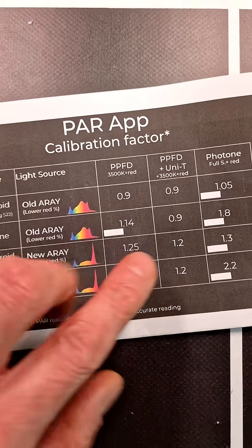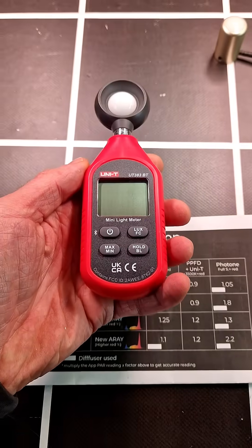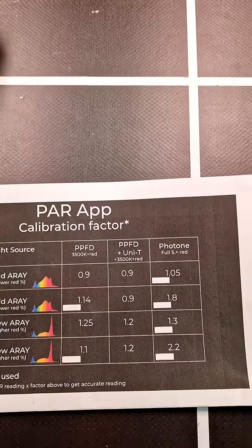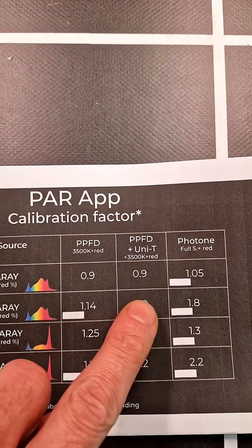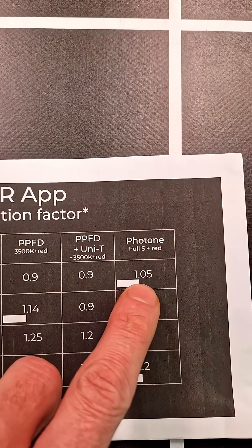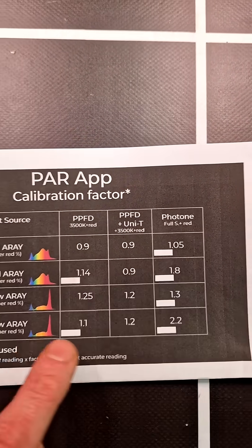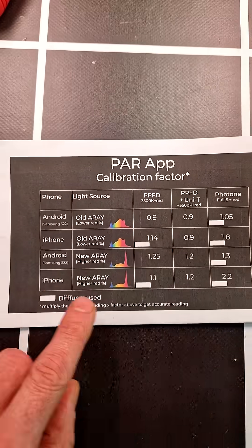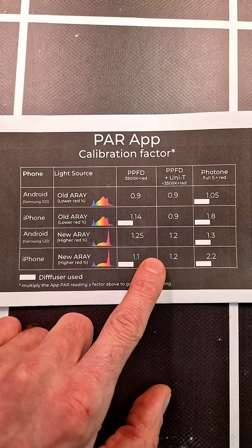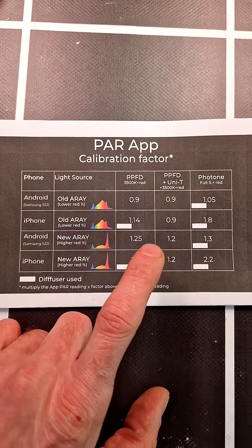When the PPFD is paired with the UniT lux meter, you get a factor of 0.9, and Photon gives 1.05. You can see along there I've done all the different calibration factors.